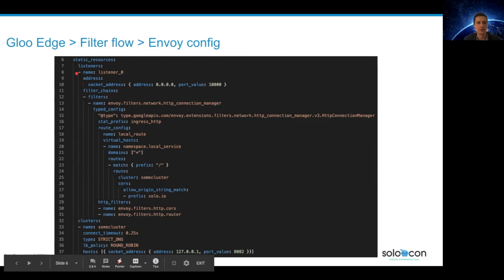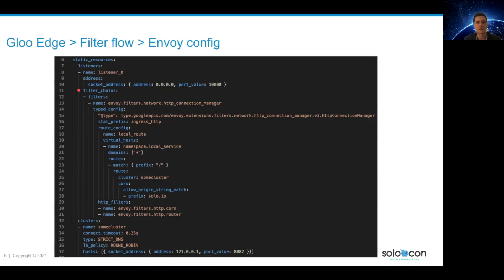A listener is bound to a network filter chain and the most common network filter is the HTTP connection manager. This allows you to define routes based on domain names and on matchers. Here we have a simple matcher that will catch every request. This request will have HTTP filters applied with some specific configuration before being forwarded upstream.